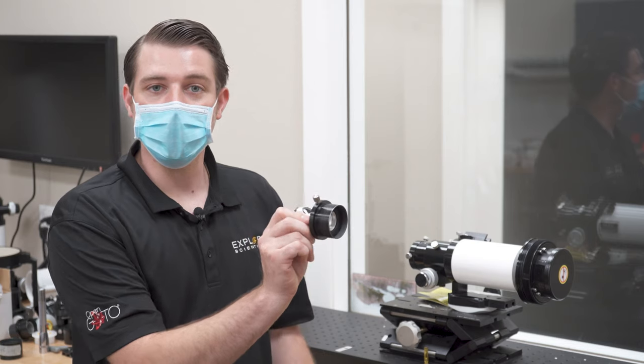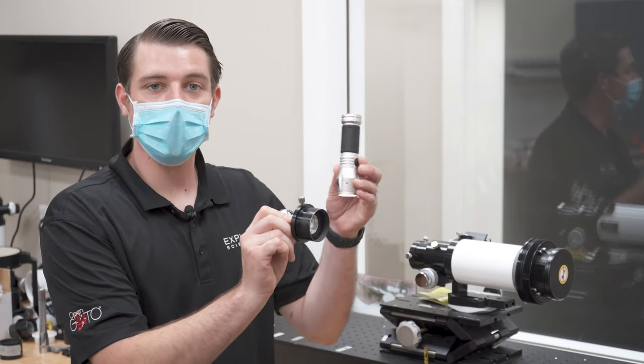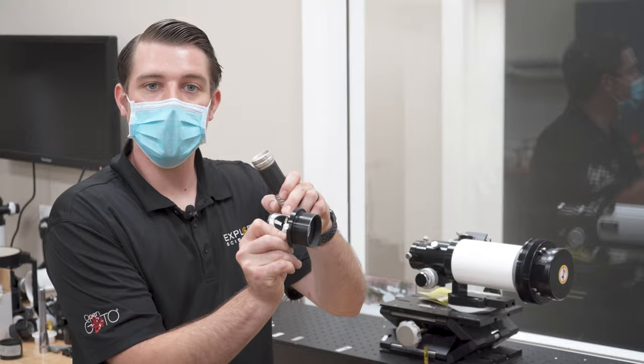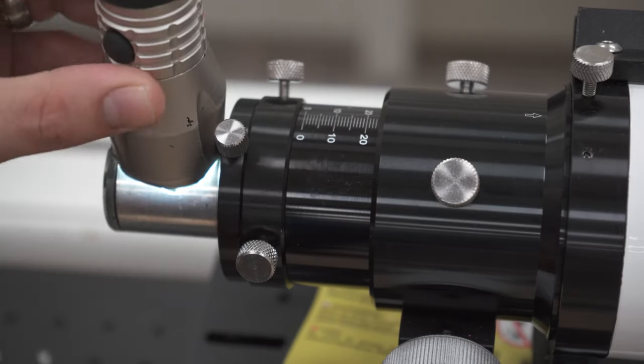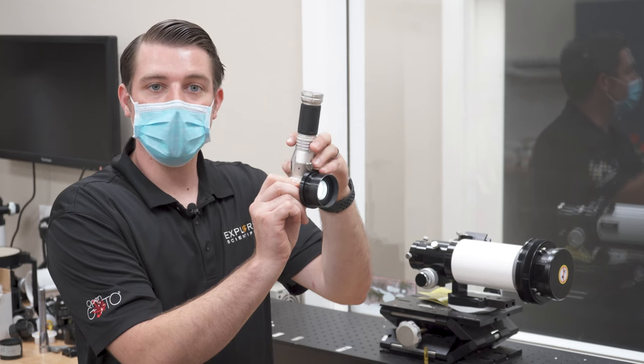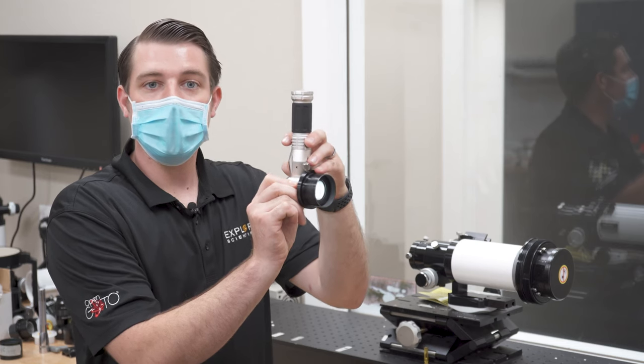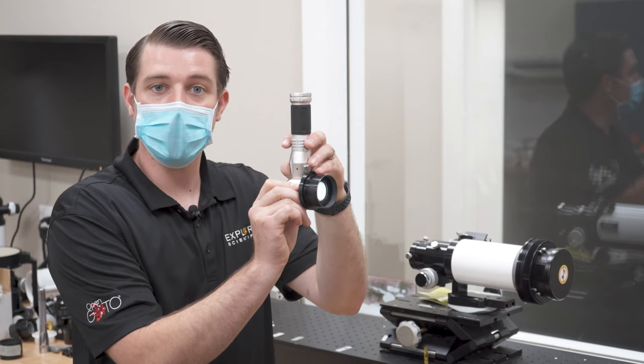Once it's installed in the back of the focuser, you're going to take your flashlight and shine it right through the top of that opening like so. There's then going to be a peephole in the back of the Cheshire and that's how you will view the position of your collimation.